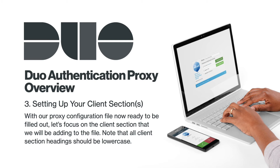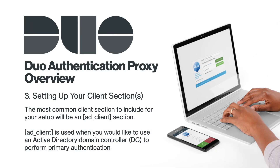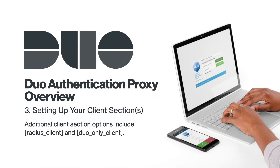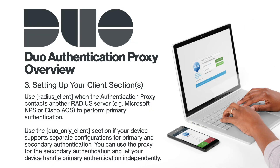With our proxy configuration file ready to be filled out, let's focus on the client section. All client section headings should be lowercase. The most common client section is an AD client section, used when you would like to use an Active Directory domain controller to perform primary authentication. To configure more than one client configuration of the same type, append a number to the section name, such as AD client 2 or AD client 3. Additional client section options include Radius Client and Duo Only Client. Use Radius Client when the authentication proxy contacts another RADIUS server like Microsoft NPS or Cisco ACS to perform primary authentication. Use the Duo Only Client section if your device supports separate configurations for primary and secondary authentication.